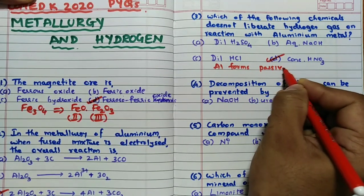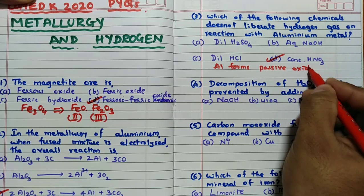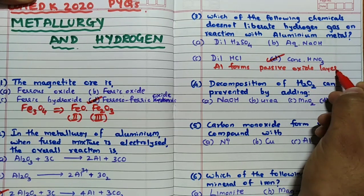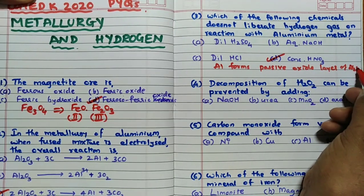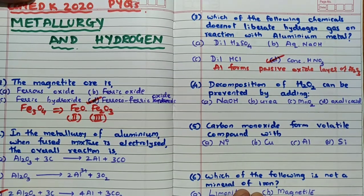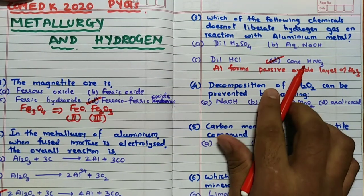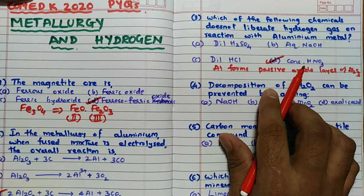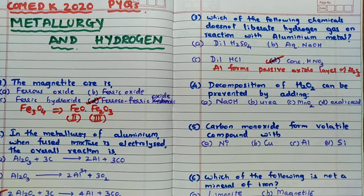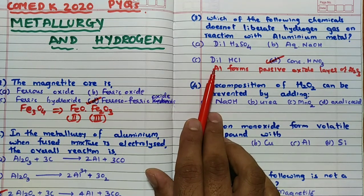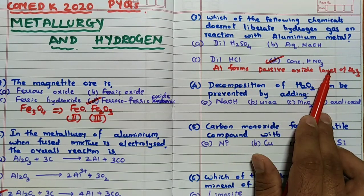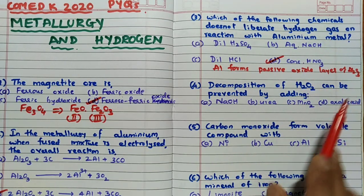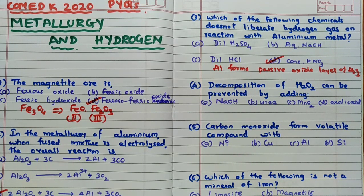But one thing remember concentrated HNO3 it cannot liberate. The reason for that is aluminum forms passive, passive means very less reactive, passive oxide layer of Al2O3 on its surface. HNO3 is very strong oxidizing agent, so instead of liberating hydrogen gas with aluminum, it will react with aluminum and form a passive oxide layer of Al2O3. So it does not liberate the hydrogen gas.